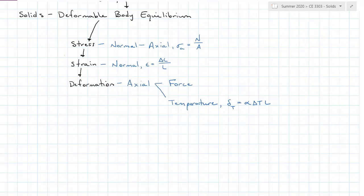Axial deformation due to force, delta F, is PL over AE. P being the internal axial force, L being the at rest or unloaded length, A being the cross-sectional area, and E being the modulus of elasticity.